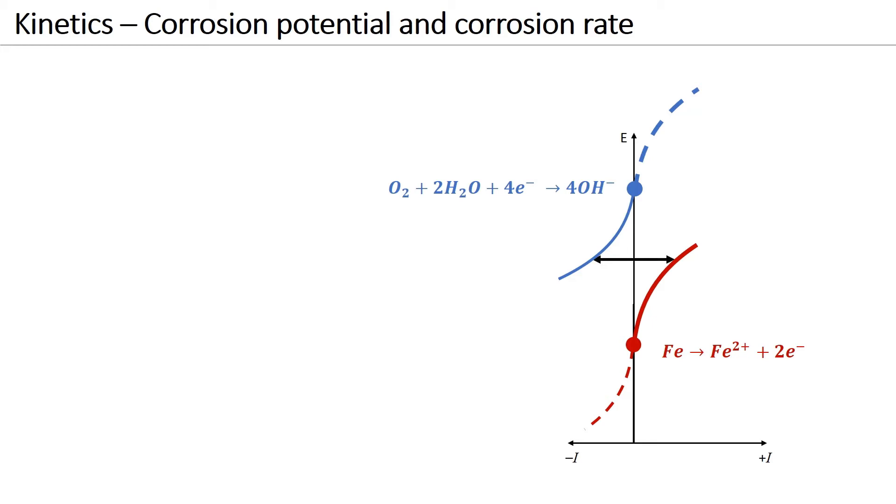This means that the total cathodic and the total anodic currents must be equal. Looking at the polarization curves, we can see that this condition of equal partial currents can be satisfied at a certain potential. This is termed the corrosion potential.